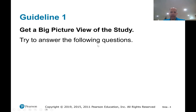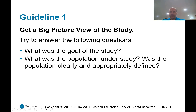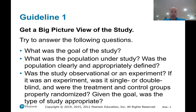The first guideline is to get a big picture view of the study. Try to answer the following questions: What is the goal of the study? What was the population under study? Was the population clearly and appropriately defined? Was the study observational or an experiment? If it was an experiment, was it single blind or double blind? Were the treatment and control groups properly randomized? Given the goal, was the type of study appropriate?